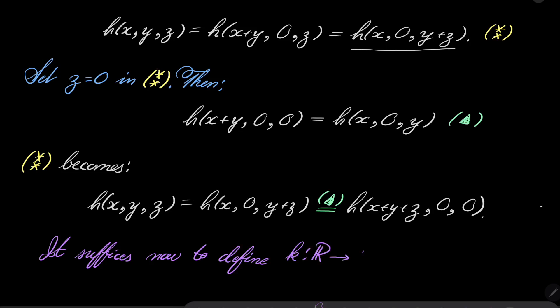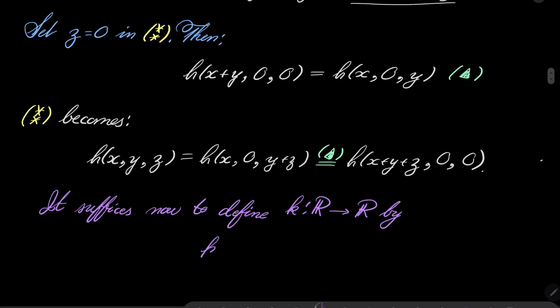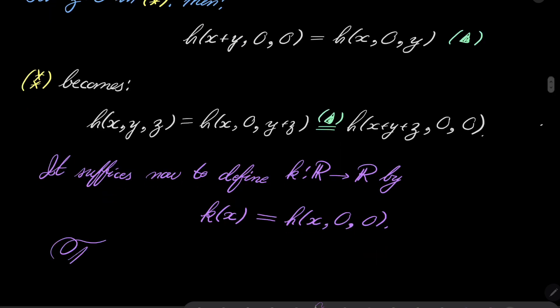By the formula k(x) = h(x,0,0), and then h(x,y,z) as we know equals k(x+y+z).